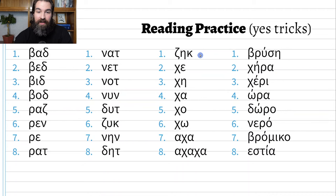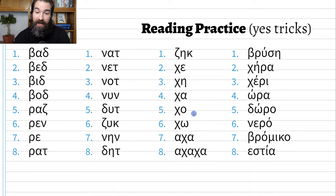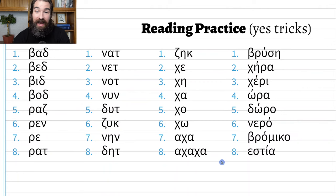Third column, number one: 'zeek.' Number two, the X-looking letter is chi — pronounced H: 'hee.' Number three: 'hee.' Number four gets caught in the throat: 'ha.' Number five also caught in the throat: 'ho.' Number six also 'ho' — five uses omicron, six uses omega, exact same sound. Number seven: 'aha.' Number eight is how Greeks laugh in text messages — we write 'haha,' Greeks write 'ahaha.'